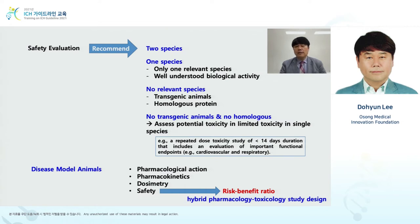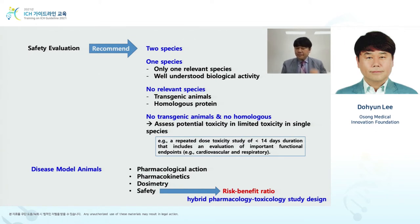For safety evaluation, it is recommended to use two different species. If there is only one relevant species and the biologic activity is well known, one species is acceptable. If there is no relevant species, transgenic animals or a homologous protein with comparable activity is recommended. The comparable material refers to, for example, human TNF-alpha assessment — when mouse is used, mouse TNF-alpha can be given as a comparable protein. If there is neither a transgenic animal nor a homologous protein, limited toxicity can be assessed.